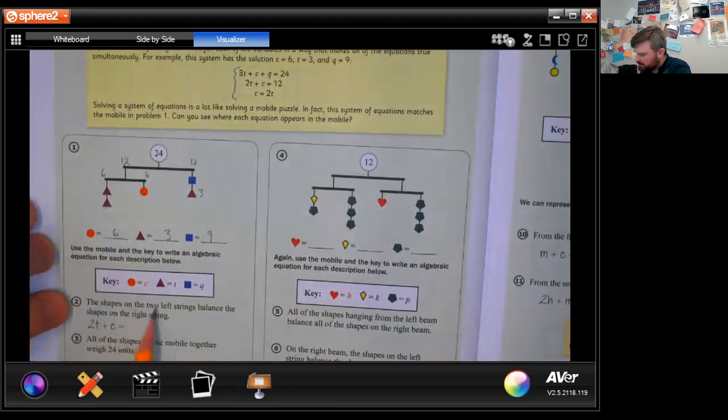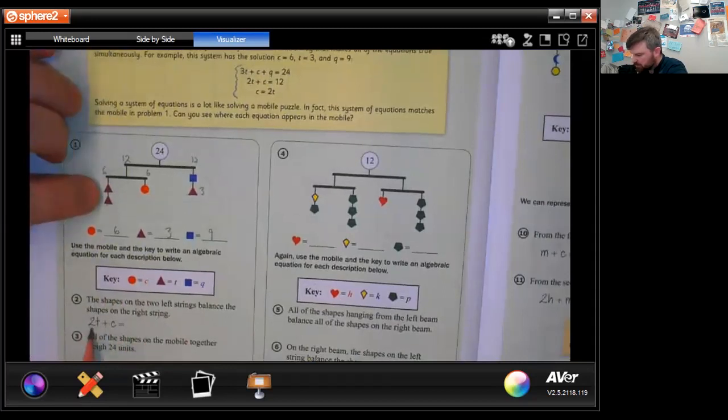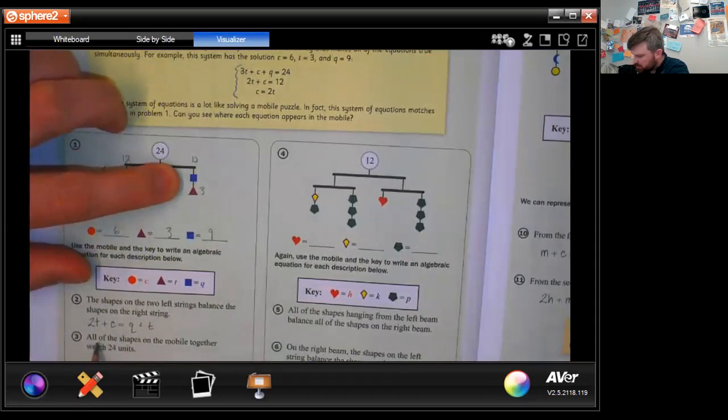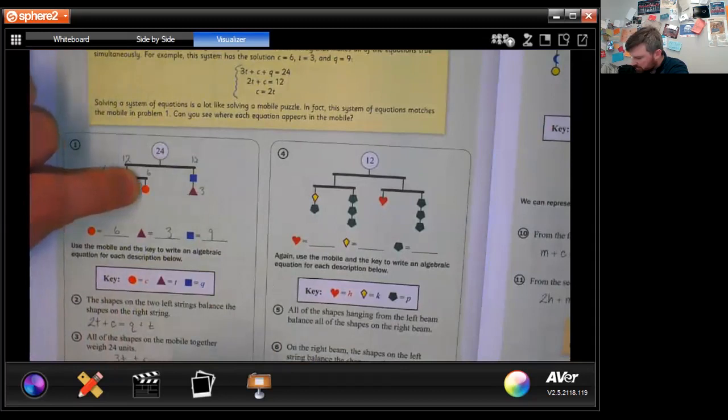Use the mobile and the key to write an algebraic equation for each description below. The shapes on the left strings balance the shapes on the right string. So two triangles plus a circle equals a square plus a triangle. All the shapes on the mobile together weigh 24 units. So we have three triangles plus a circle plus a square or Q equals 24.